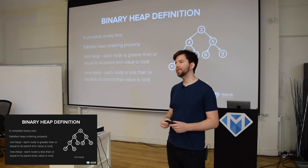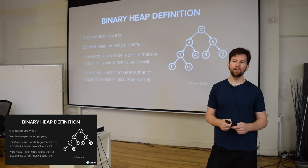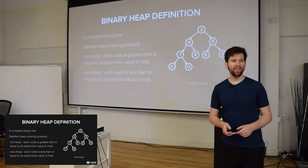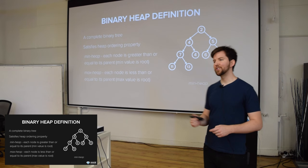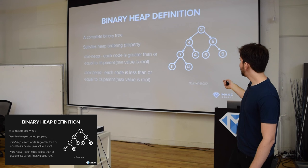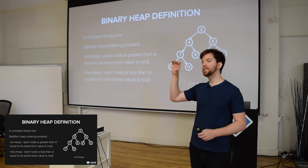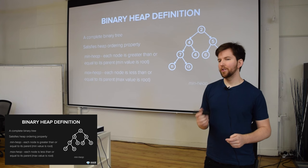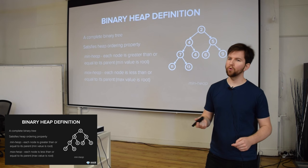Does anyone want to take a guess as to why heaps might be a useful data structure? It's super useful for finding the minimum value or the maximum value. So if we look at this heap, we can tell that two is the smallest value and it's at the root position. In a min heap and a max heap, the root position will always either have the minimum or maximum value. And as we'll see later, we can leverage that property to do some cool things with heaps.